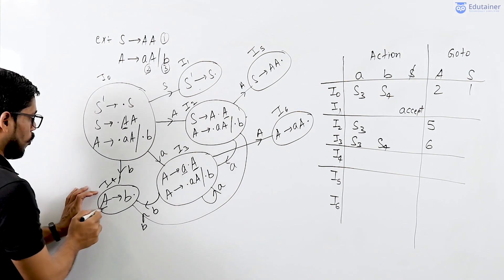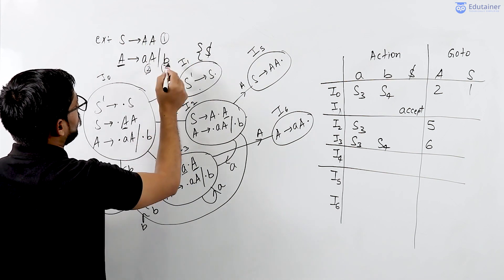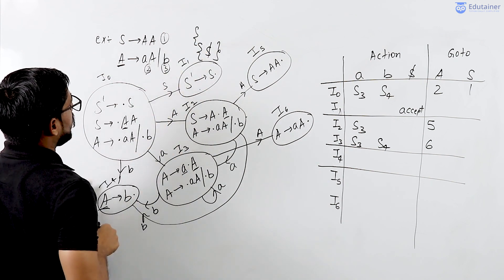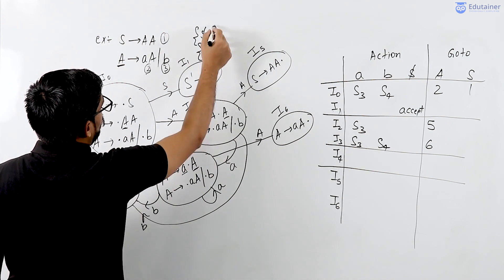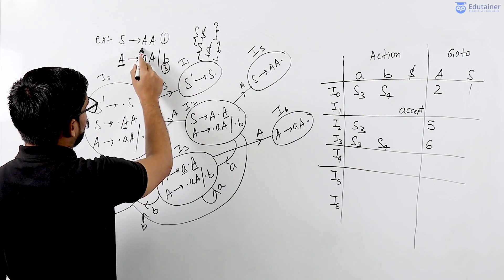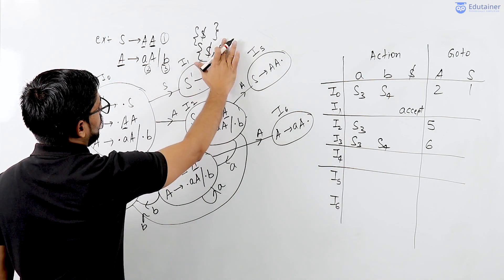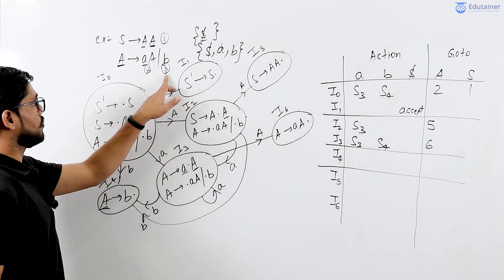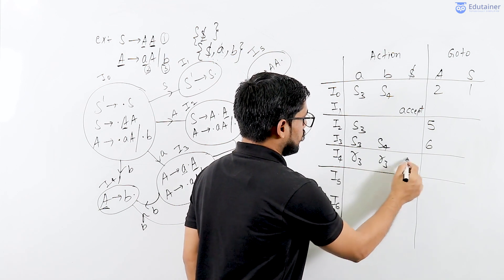R3 will be placed only in the follow of the left-hand side. Follow of A: follow of S is dollar, and follow of A is follow of S and follow of again A. Follow of A means dollar, and here follow of A is also first of A — first of A is a or b. So along with dollar we have small a and small b. Follow of S only contains dollar. So production number 3, R3, will be placed in the follow of A: dollar, a, and b — so R3 in dollar, R3 in a, and R3 in b.